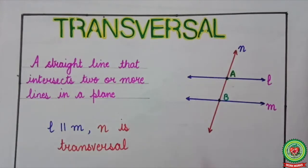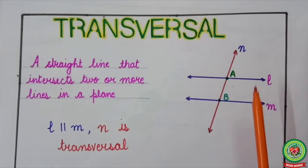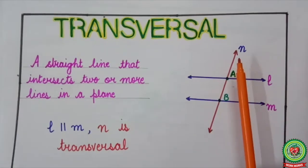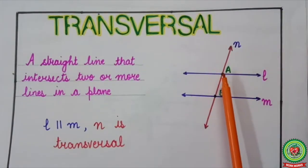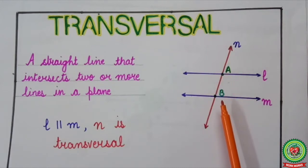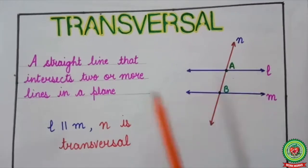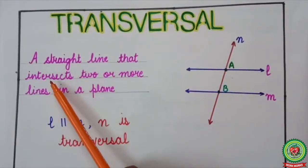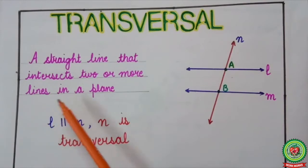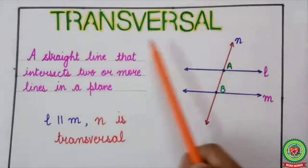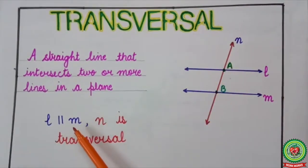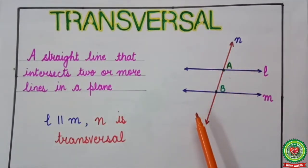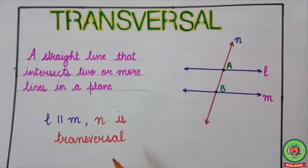In this figure, l is parallel to m, and a straight line n is cutting or intersecting lines l and m at points A and B respectively. A straight line that intersects two or more lines in a plane is known as a transversal. So here, l is parallel to m and line n is the transversal.